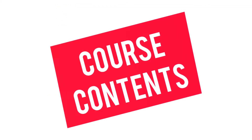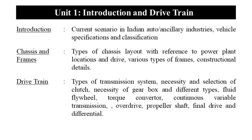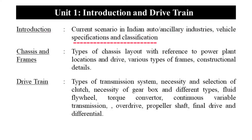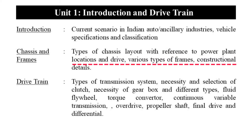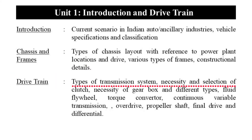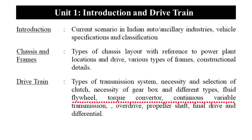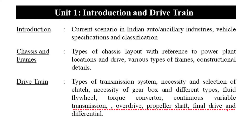The first unit is Introduction and Drive Train. Here we study the current scenario in Indian auto and ancillary industries, vehicle specifications and classification, chassis and frames — including types of chassis layout with reference to power plant locations and drive, various types of frames and construction details. The drive train covers types of transmission systems, clutch, gearbox, fluid flywheel, torque converter, CVT, overdrive, propeller shaft, final drive, and differential gearbox.